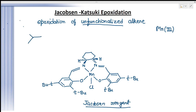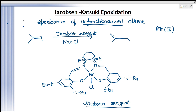See here — suppose we are taking this alkene. This is an unsymmetrical and unfunctionalized alkene. So when it is treated with the Jacobsen reagent in the presence of NaOCl, then its epoxidation is done and we get this type of product. The stereochemistry in this reaction is very important, and it all depends upon this Jacobsen reagent.